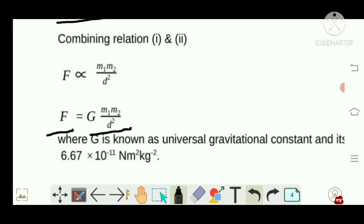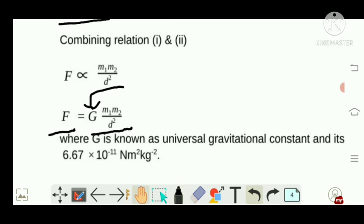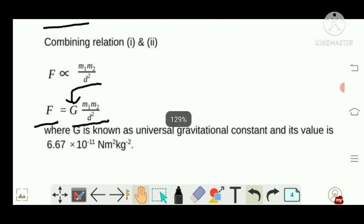Okay, this is G, known as universal gravitational constant. Where G is universal gravitational constant and its value is 6.67 times 10 to the power minus 11 Newton meter squared per kg squared.